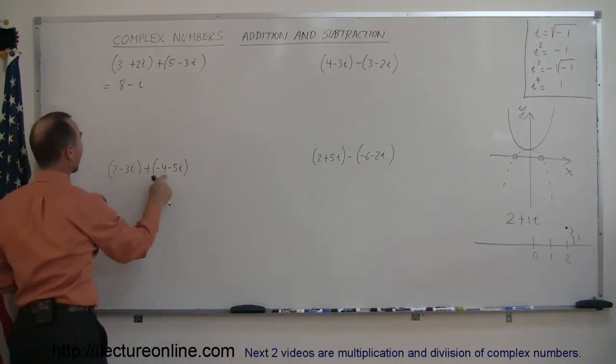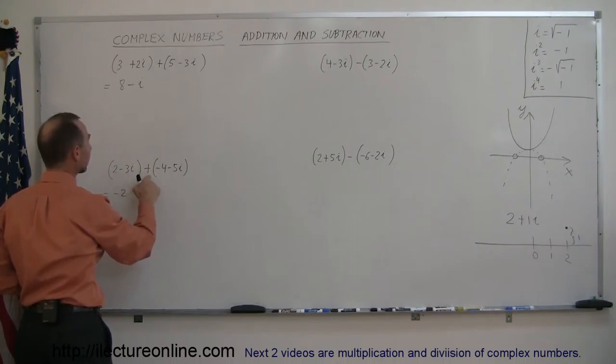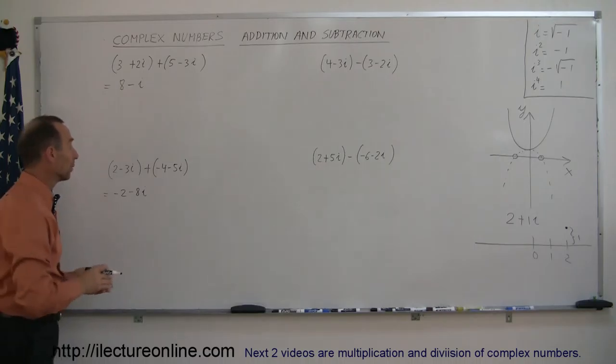Here again, you add the real parts together, so it's 2 plus negative 4, which is negative 2. And minus 3i plus minus 5i is minus 8i. Simply add the real parts together and add the imaginary parts together.